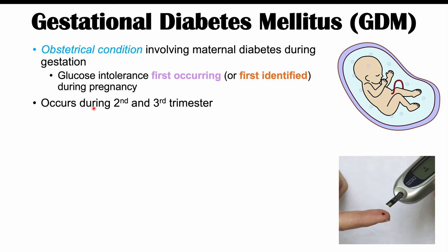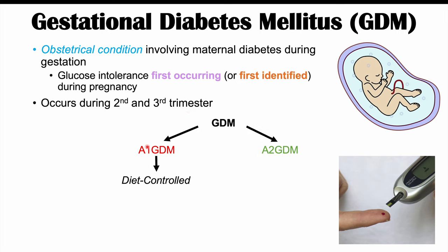More specifically, gestational diabetes occurs during the second and third trimester of pregnancy. There are two types of GDM: A1 GDM, which is diet controlled, and A2 GDM, which involves medication use. We'll talk about this in more detail when we discuss treatment later in this lesson.